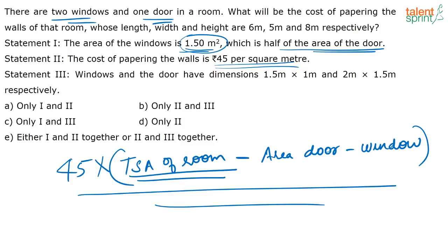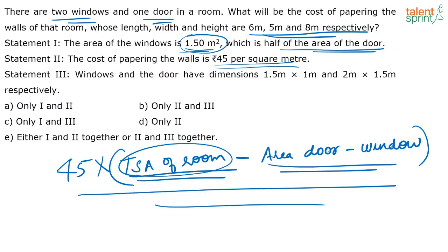The most important thing in data sufficiency questions is that you don't need to actually solve it — just by looking at it you will know that you will get the value. From the question itself you can find the total surface area of the room. From Statement 1 you get the area of the door and window. From Statement 2 you get the cost of papering per square meter — 45 rupees. So with Statements 1 and 2 together, you get the answer.